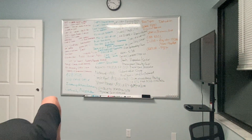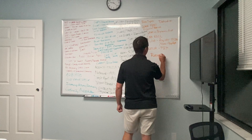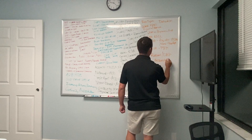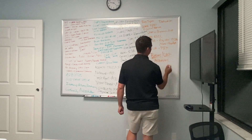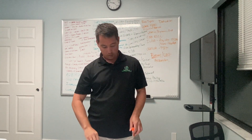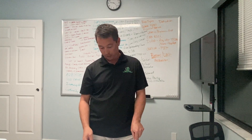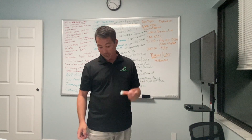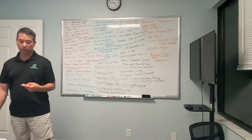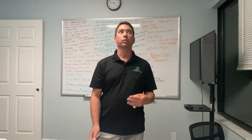Buyers cannot waive the radon disclosure. The priority order is: radon first, lead-based paint second, asbestos third. Exceptions to the lead-based paint disclosure: the house is built after 1977, the lease is for less than 100 days, or it's a month-to-month lease. Renewal leases do not require redisclosure; it's required for long-term leases only.